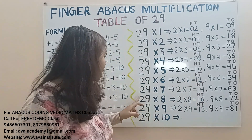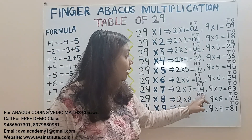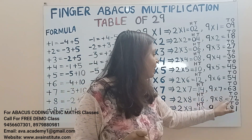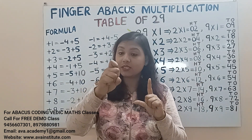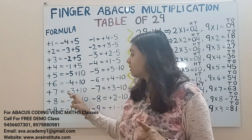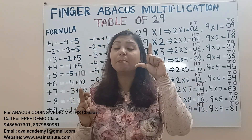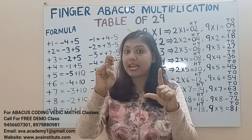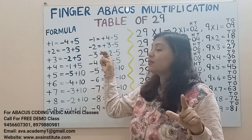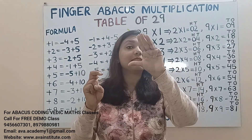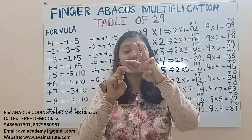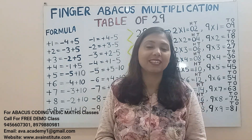Next, 29 eights. 2 eights are 16 — represent 1 in hundreds and 6 in tens. 9 eights are 72 — add 70 in tens and 2 in ones. Plus 7 formula is minus 3 plus 10, so plus 70 is minus 30 plus 100. But minus 30 is not possible since 3 fingers are down — minus 3 formula is plus 2 minus 5, so minus 30 is plus 20 minus 50. The answer: 100, 200... 10, 20, 30... 1, 2 — 232 is the answer.